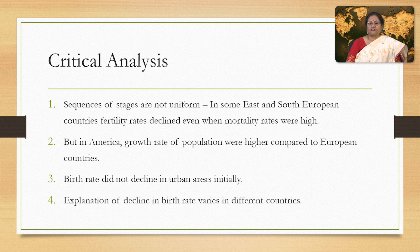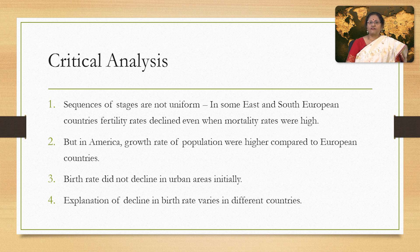Let us check the critical analysis of the theory. The theory is based on empirical observation as experienced in Europe, America and Australia. Sequences of stages are not uniform — in some East and South American countries, the fertility rate declined even when mortality rates were high, while in America, population growth rate was higher compared to European countries. Birth rate did not decline in urban areas initially, and the explanation for decline in birth rate varies. The role of man's technical innovation was ignored in this theory. Further, it does not provide a time frame for a country to move from one stage to another, and it does not hold good for developing countries which have experienced unprecedented population growth due to decline in death rate.